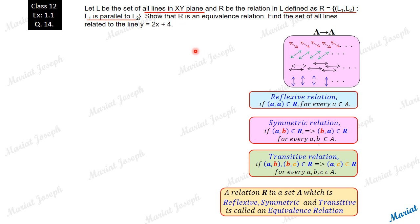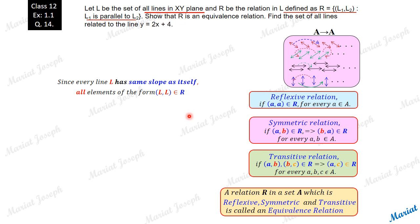Let's see whether it is a reflexive relation. Since every line L has the same slope as itself, all elements of the form (L, L) will belong to the relation — the lines are parallel, so the pair belongs to R. We can say (L, L) belongs to R for all lines L, because L and L have the same slope, so L is parallel to L. Hence, this relation satisfies the reflexive definition, and we can say the relation is reflexive.